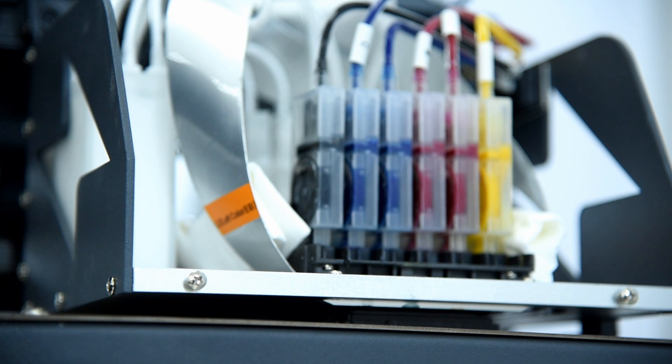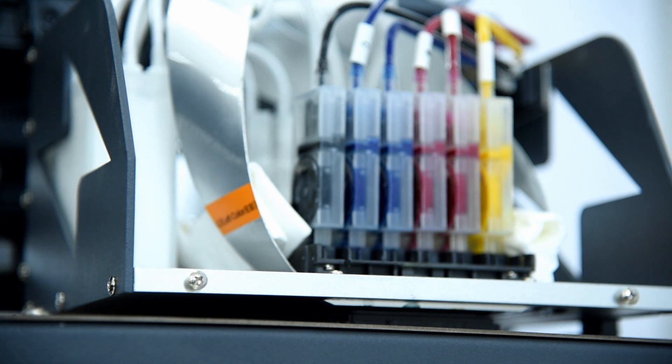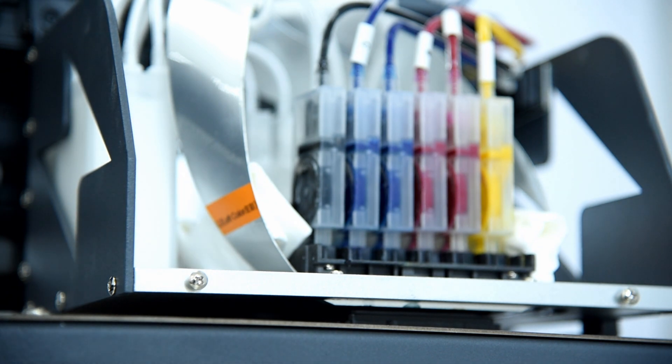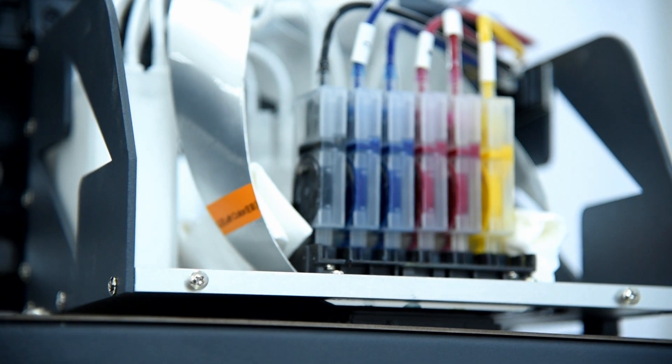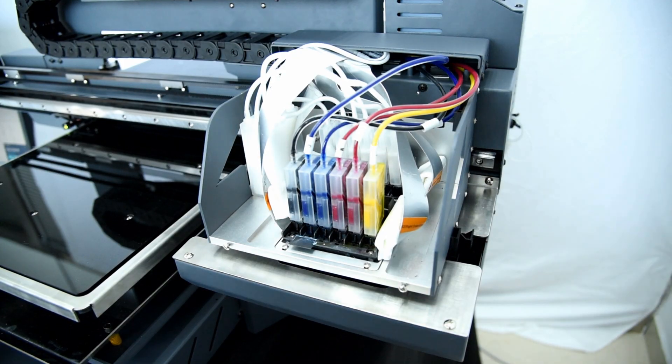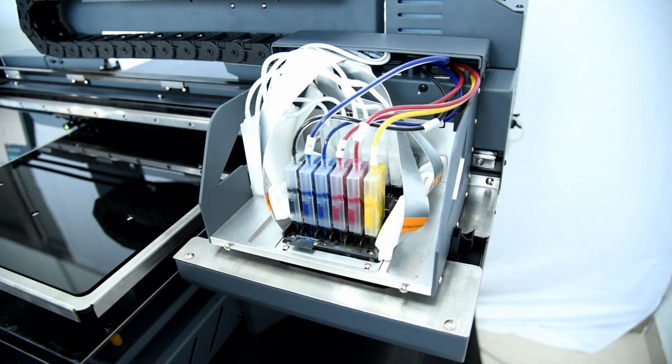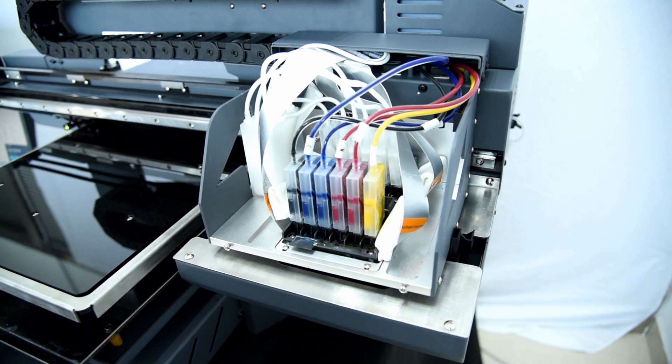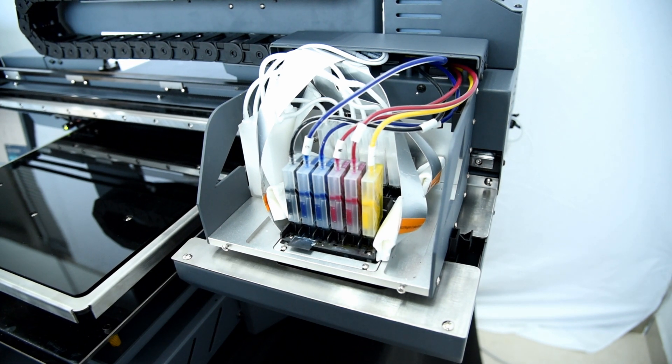After we clean the print head, how do we know if the ink is pumped out or not? We need to move the carriage out of home position. After we clean the print head from the software, how do we know if the ink goes to the cap station and the waste ink tank, if it goes through or not?